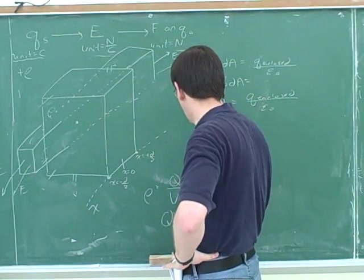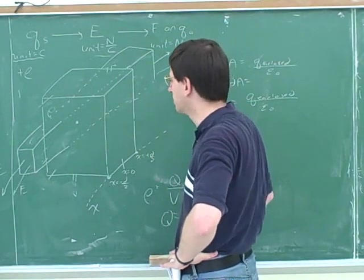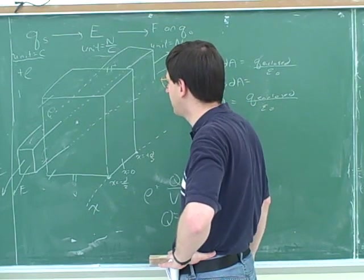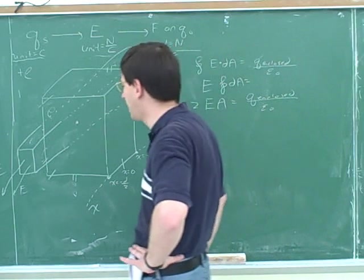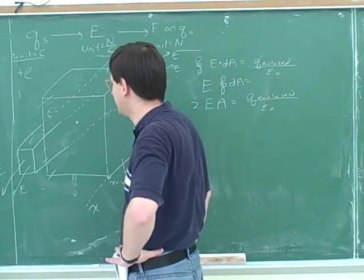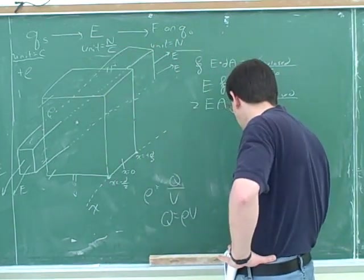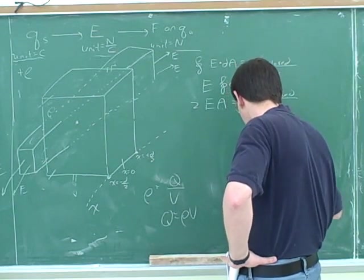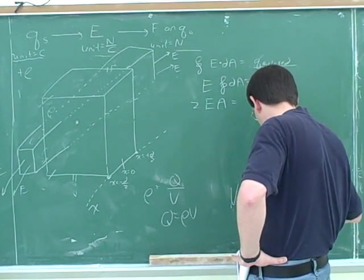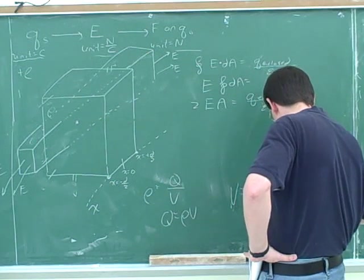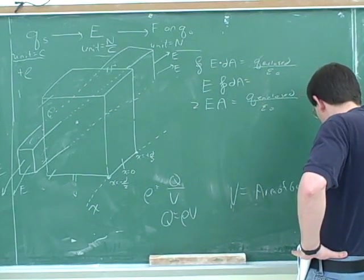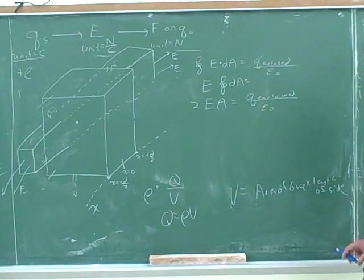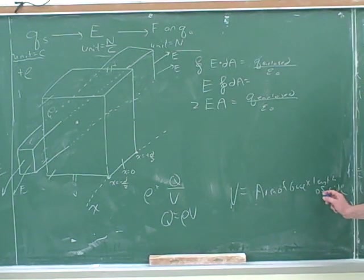We need to figure out what volume we've got here. We can use the basic idea that if you have any kind of regular solid where the sides are perpendicular to the base, the volume is just the area of the base times the length of the side.